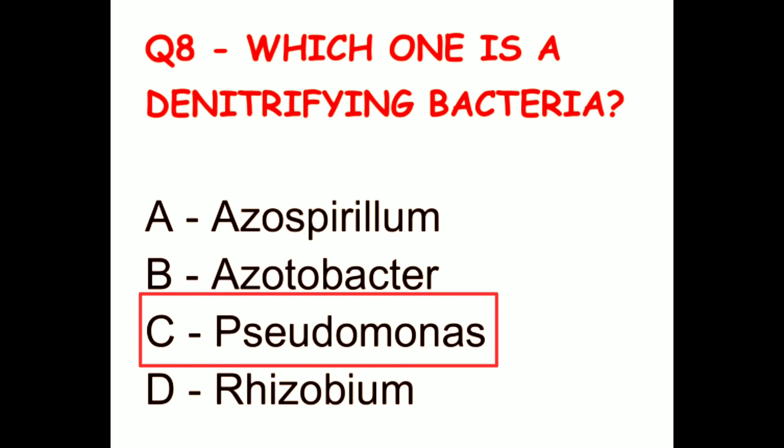Question 9. Anidation is? The options are allelopathy, leguminous effect, complementary interaction, or none of these. The correct answer is complementary interaction.